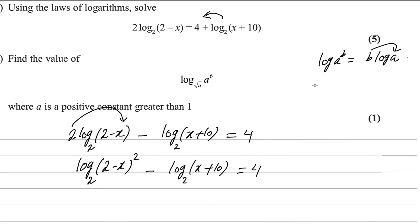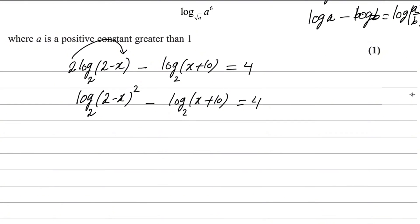There is another rule: log(a) - log(b) = log(a/b). If two logarithms are subtracting, we can divide them together. So we can change this one into log₂((2-x)²/(x+10)) = 4.